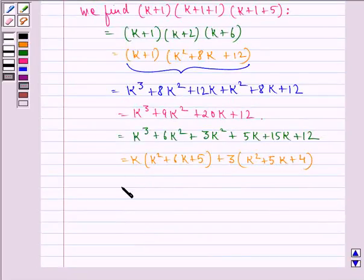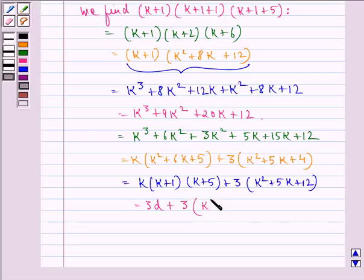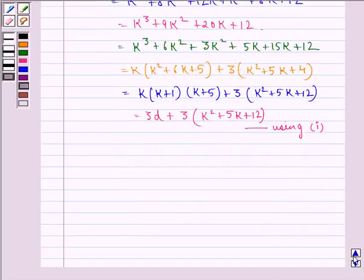We see this is equal to k(k+1)(k+5)+3(k²+5k+12). This is equal to 3d+3(k²+5k+12), which we get using equation 1. This is equal to 3(d+k²+5k+12).